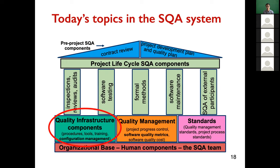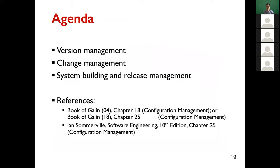Software configuration management is part of the quality infrastructure component in our overall software quality system. Today we will cover the four components of software configuration management: version management, change management, system building, and release management — discussing system building and release management together.